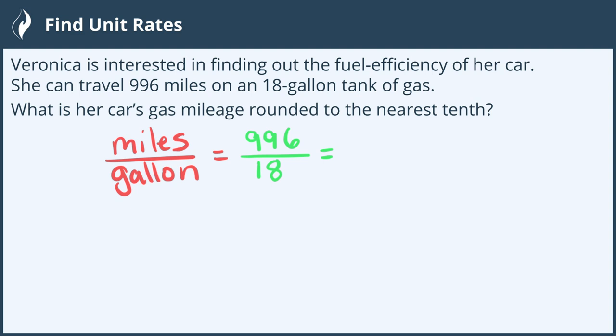Dividing this in our calculator will give us 55.3 repeating, and we need to round this to the nearest tenth. We'll look to the hundredths place and see that in this case it's less than five, so we round down.